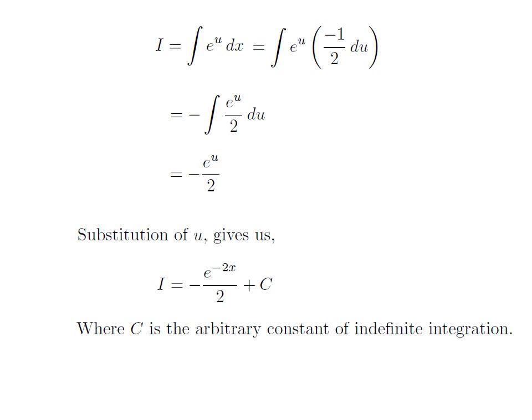We had solved the integration in terms of u. Now we need to take back the expression in terms of x. I have replaced u by minus 2x, which we had assumed earlier. So i, the integral of exponential of minus 2x, is equal to minus of e to the power minus 2x divided by 2, then added capital C, which is the arbitrary constant of indefinite integral. Do not forget to add this constant at the end of any indefinite integration.